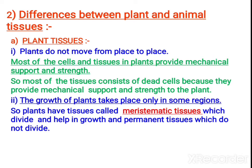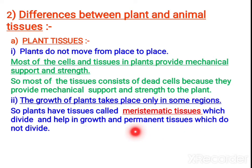In plants, growth only takes place in some regions, and the regions where growth occurs are called meristematic tissue. This is where mainly the growing tissues are present. When the shoot grows, the shoot meristem is present at the shoot tip. When the root grows, the root meristem is present at the tip of the root.